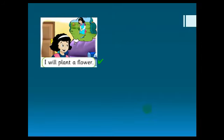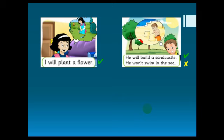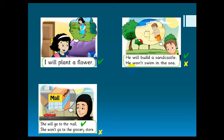Let's see more examples. Here you see this girl - what will she do? She will plant a flower. So she will say: I will plant a flower. Another example: look at this boy - what is he going to do? Yes, he will build a sandcastle. But he won't swim in the sea. So he will build the sandcastle but he won't swim in the sea.